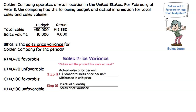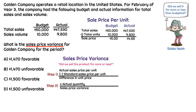So let's start by calculating the sales price variance. We need to take total sales and divide by sales volume for both budget and actual to get the price per unit. For the budget, it's $50,000 divided by 10,000 units, which is $5 per unit. The actual sales price per unit is $47,530 divided by 9,800 units, which gives an actual sales price per unit of $4.85.